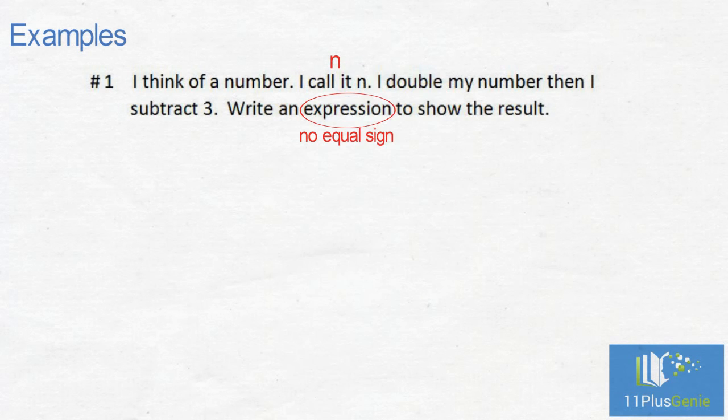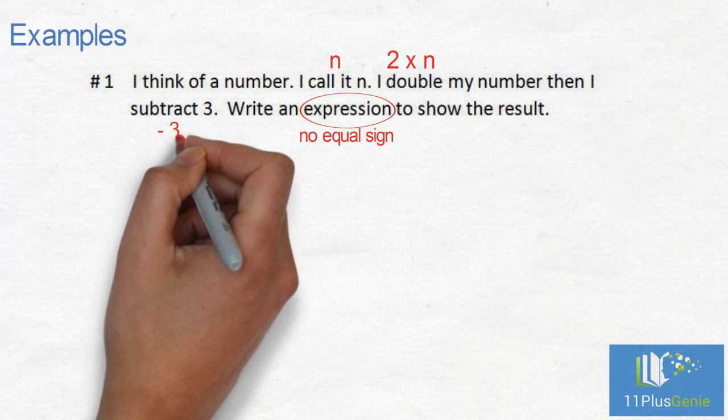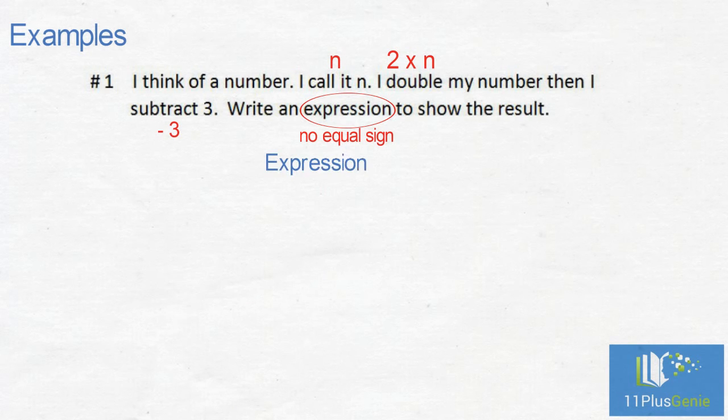We need to write an expression, so there will be no equal sign. The number is n. Double means 2 times n. And then minus 3. The expression is 2n minus 3.